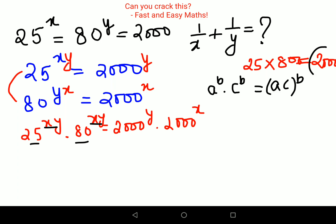That is nothing but 2000, so this is 2000 the whole raised to xy. This equals... now we also know a raised to m into a raised to n equals a raised to m plus n.